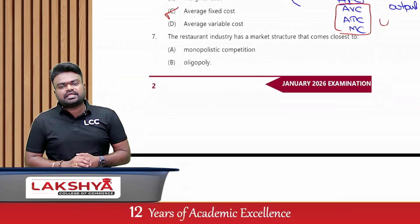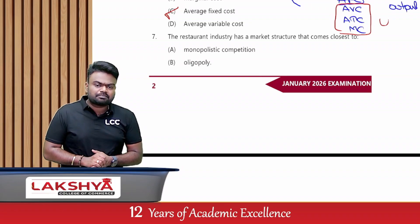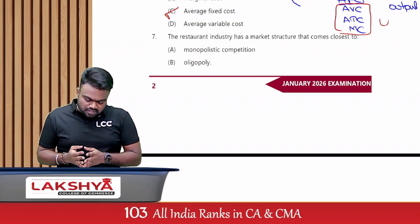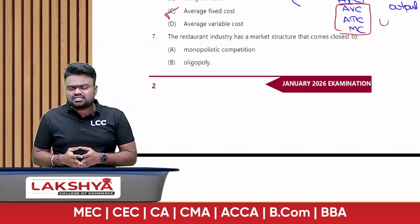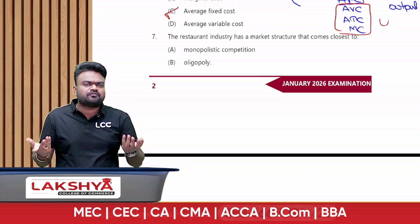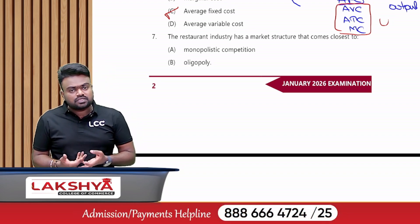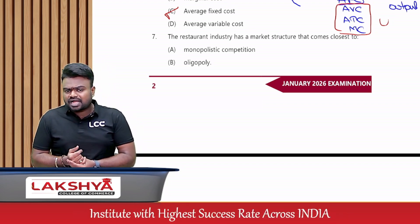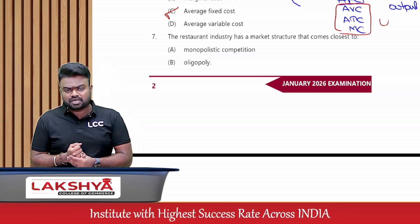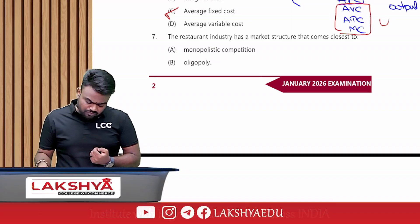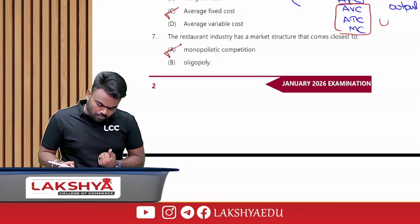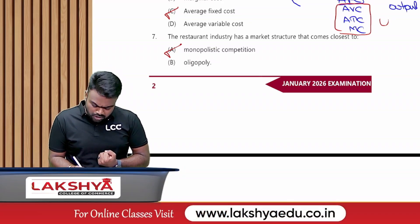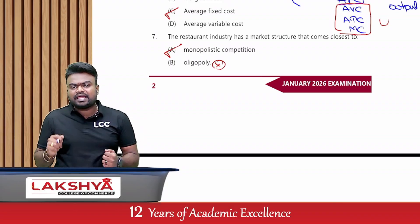The restaurant industry has a market structure that comes close to what? The restaurant industry has many firms — a large number of sellers in the market. So the answer is monopolistic competition, option A. The key given was oligopoly, which is wrong.